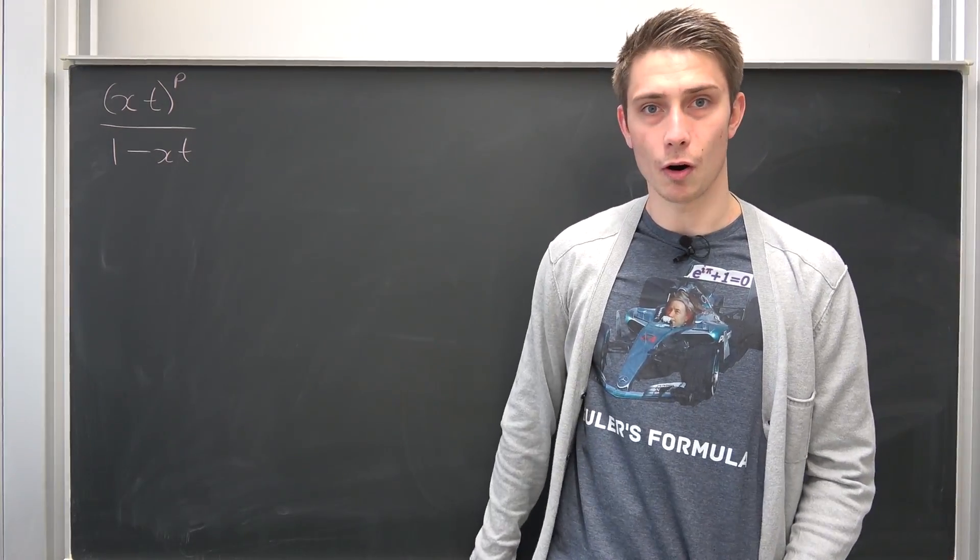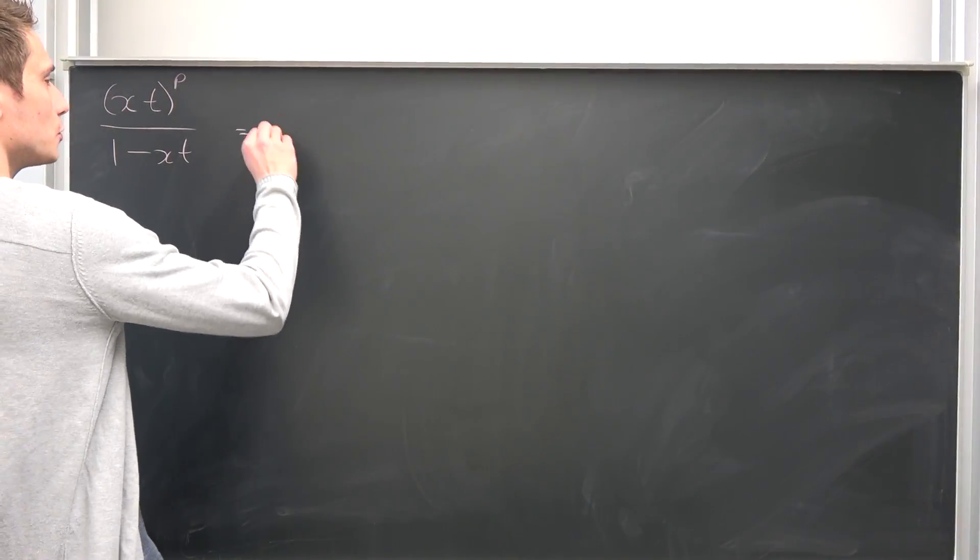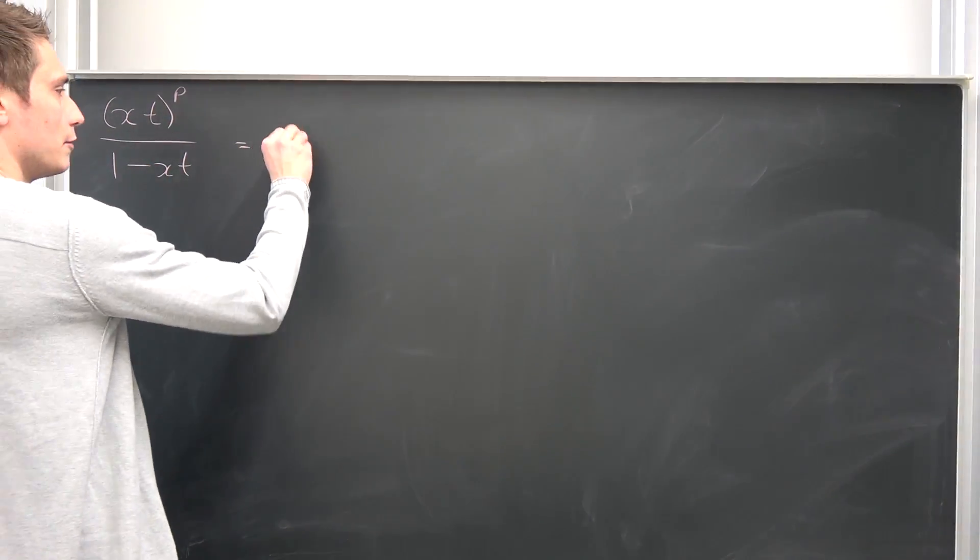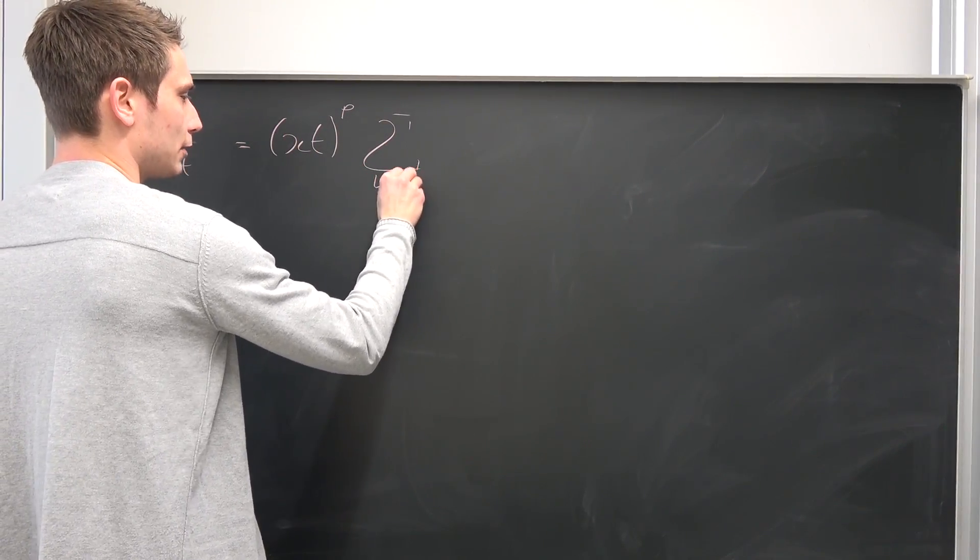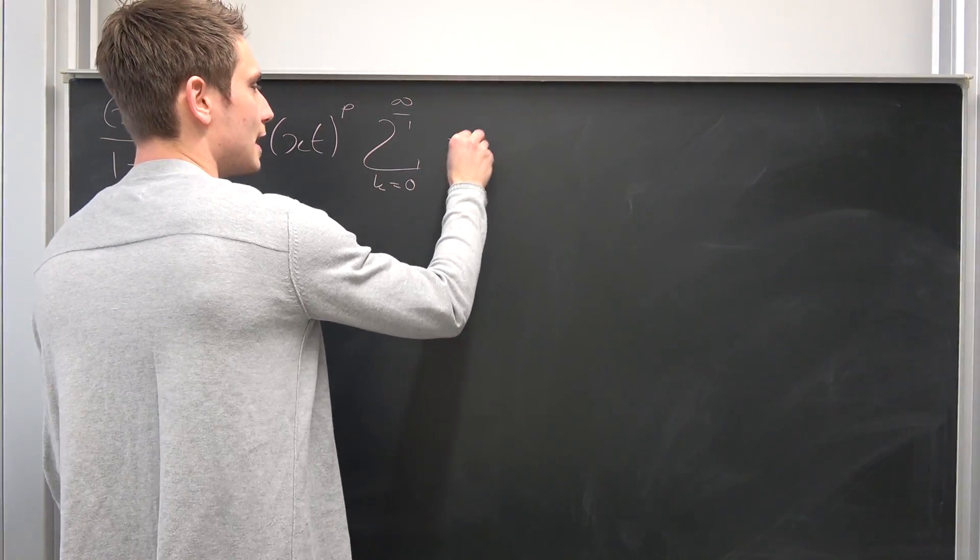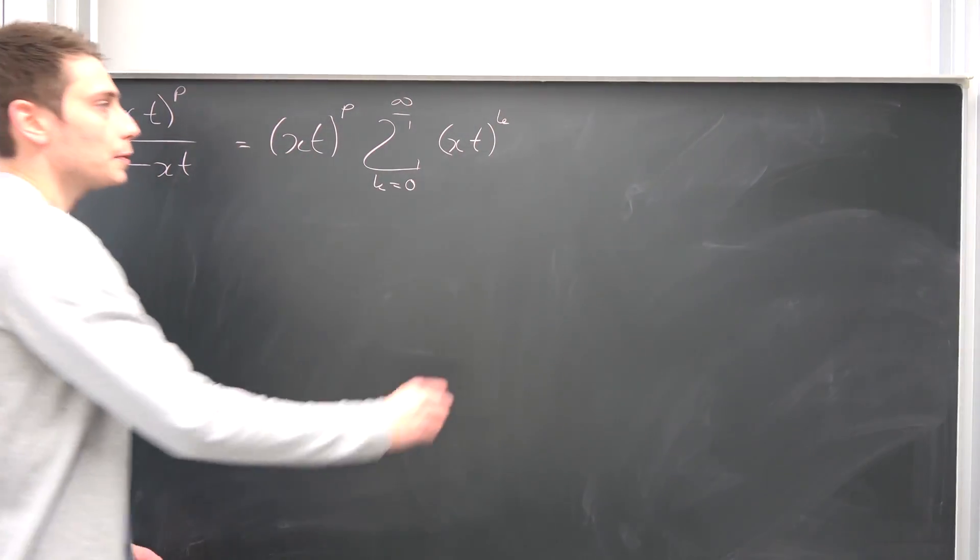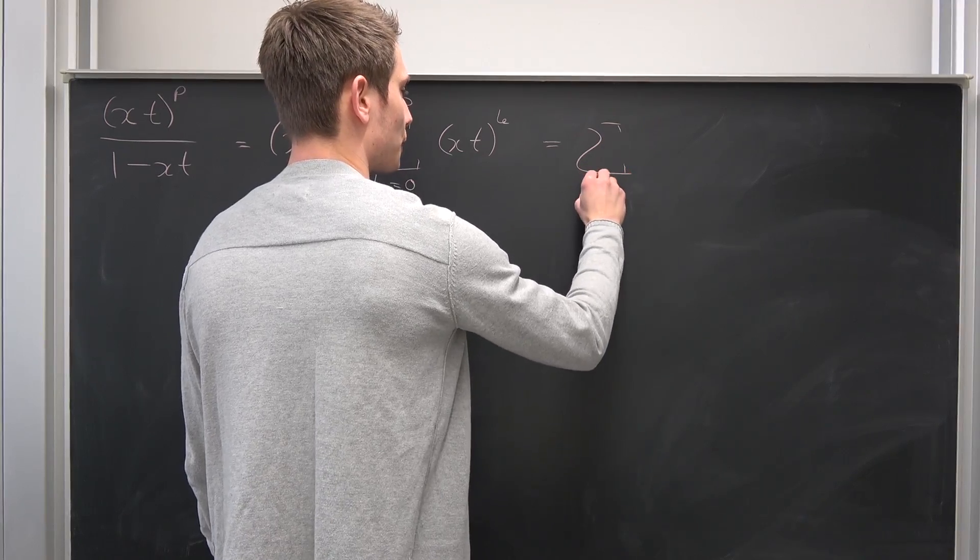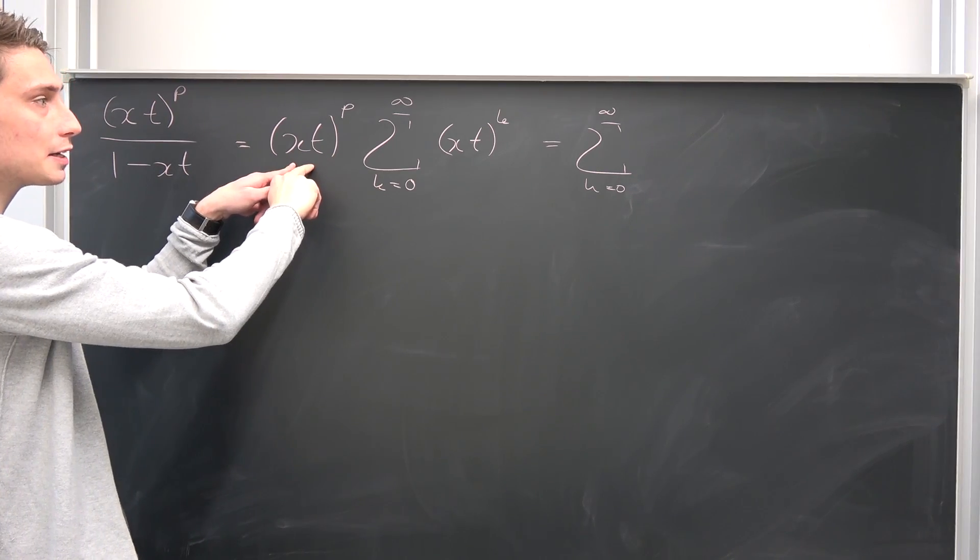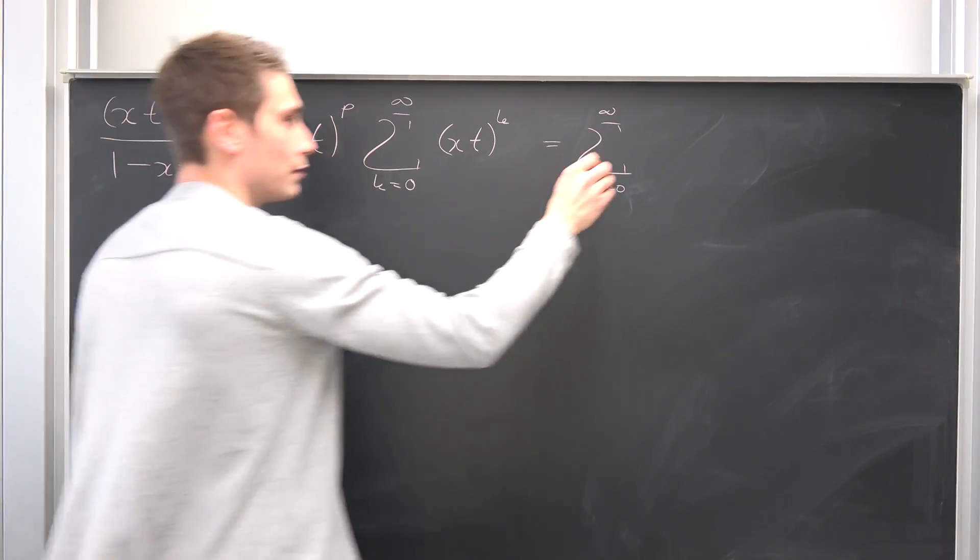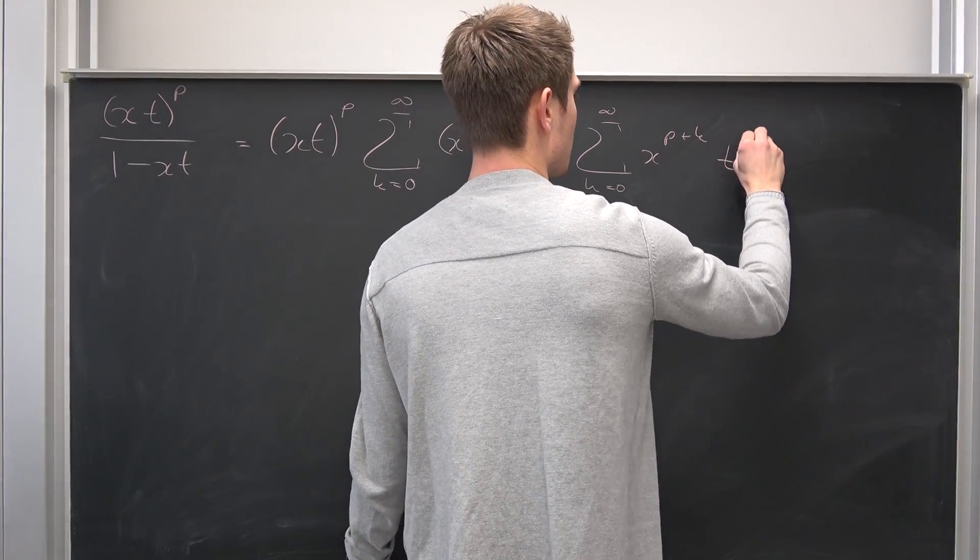Namely, if our absolute value of x times t is between negative 1 and 1 strictly, then we can actually turn this into the geometric series down here. So we have x times t to the pth power times the sum running from k equals 0 to infinity of x times t to the kth power. We can play around a little bit with this, to turn this into a sum running from k equals 0 to infinity. This is just a constant, so we can bring this to the inside. Let's put the exponents together: x to the p plus kth power times t to the p plus kth power.